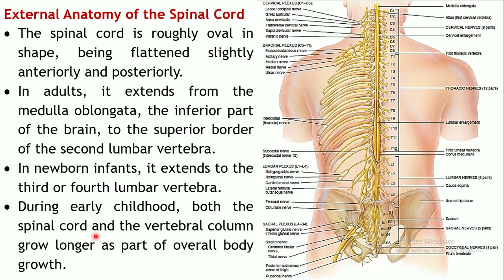Now coming to the external anatomy of the spinal cord. The spinal cord has a roughly oval shape in cross section, flattened anteriorly and posteriorly, and bulging on either lateral side. It extends from the lower portion of the medulla oblongata — the inferior part of the brain — to the superior border of the second lumbar vertebra.